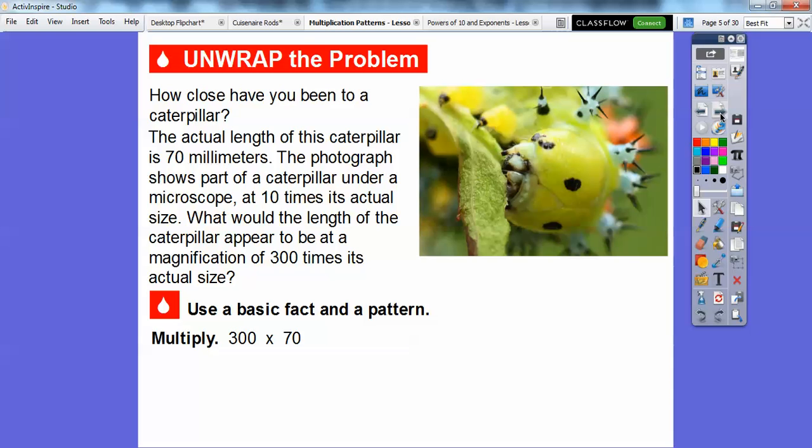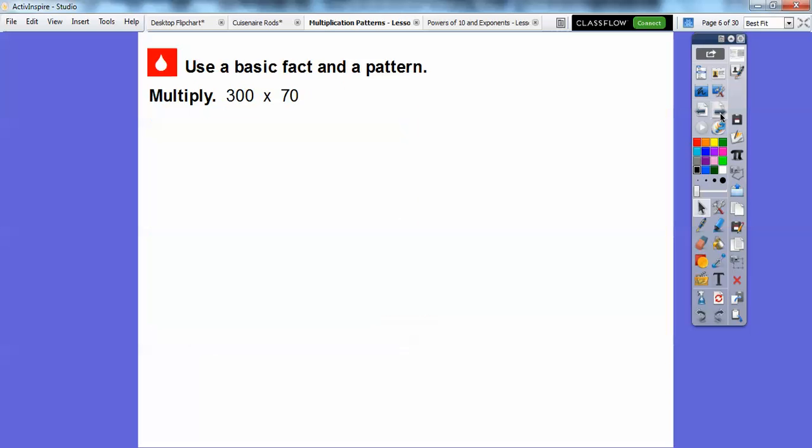What would the length of the caterpillar appear to be if its magnification was 300 times its actual size? We're going to use basic facts to multiply 300 times 70. Here we go. 3 times 7. Everybody knows 3 times 7 is 21.